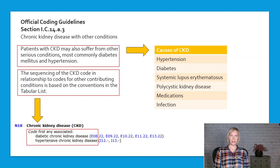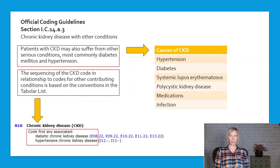CKD typically develops as a complication of other diseases, with diabetes and hypertension being the most common causes. But there are also other potential underlying causes like lupus, polycystic kidney disease, medications, and infection that can lead to CKD.